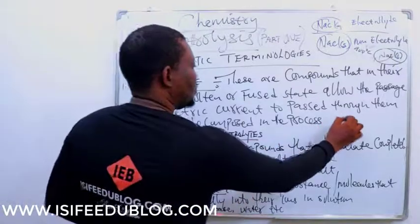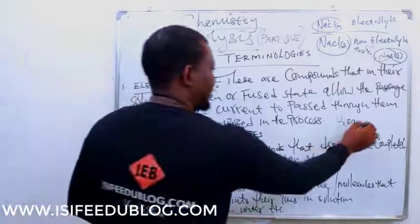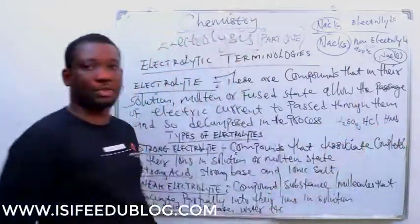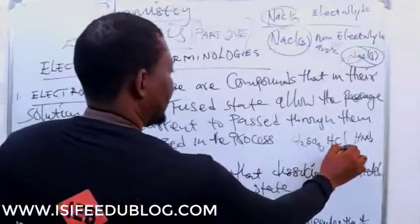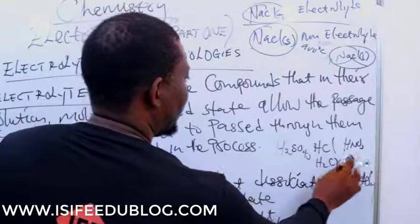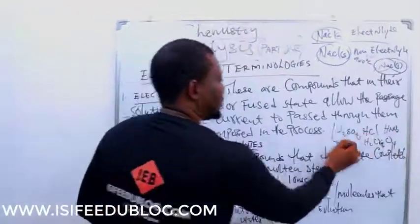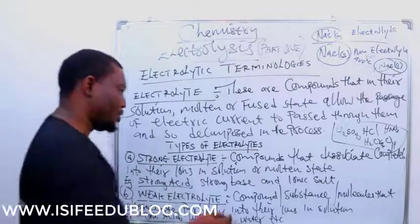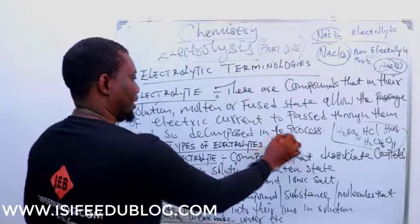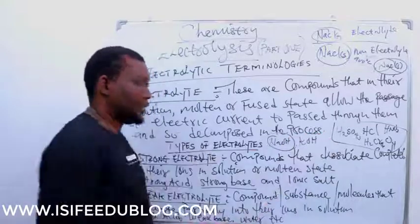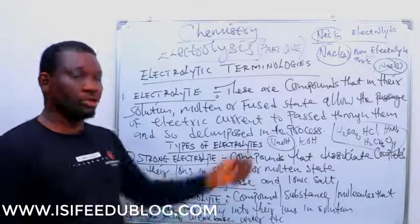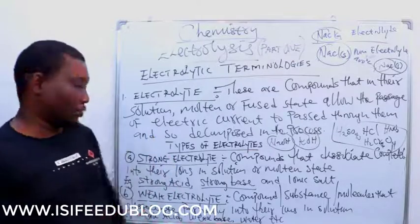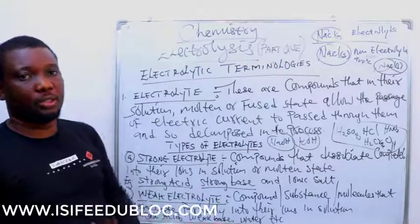Examples of strong electrolytes include strong acids: H2SO4, HCl, HNO3, and H2CrO4 are all strong acids and therefore strong electrolytes. All strong bases are also strong electrolytes — for example, sodium hydroxide is a strong base and a strong electrolyte.